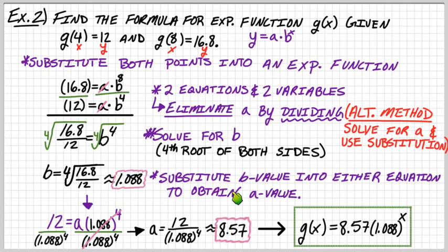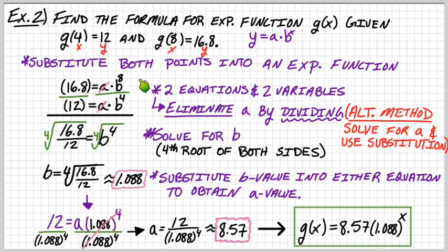Now I have both a and b. The whole goal was to write the function g(x) equals a times b to the x, so g(x) equals 8.57 times 1.088 to the x. The most difficult part was plugging each point into its own equation, stacking them, and dividing to eliminate a. Alternatively, you could solve one equation for a and substitute into the other.